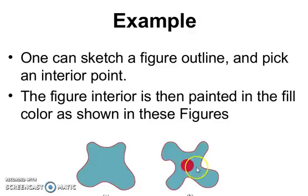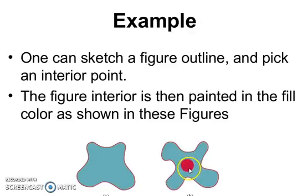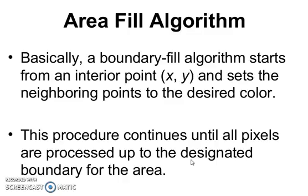In this figure you can see the circle in red color, which is called the interior point or seed point. This is then painted in the fill color as shown in these figures. Basically, a boundary fill algorithm starts from an interior point (x, y) and sets the neighboring points to the desired color. This procedure continues until all the pixels are processed up to a designated boundary for the area.